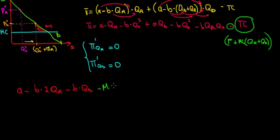Let's call marginal cost just m for notation. The qd term has nothing with qr, so that is going to be zero. So this whole first derivative is going to equal zero.